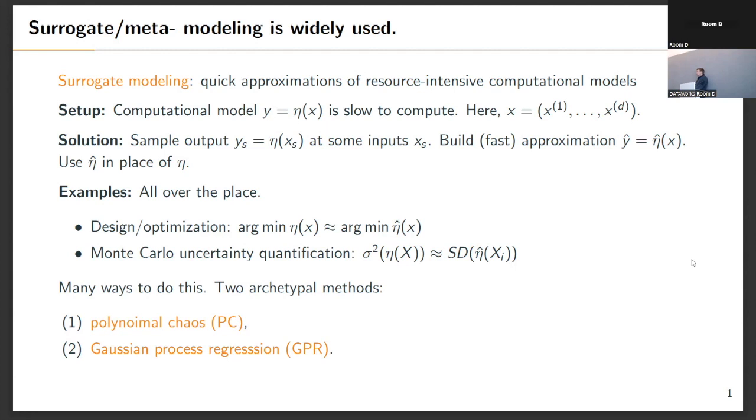And basically, then what I'm going to do is I'm going to use eta hat in place of eta. And this is done all over the place. There's been a ton of talks today already on this, which is great. You know, optimization, I want to optimize eta. Well, I can optimize eta hat. If I want to do some UQ on eta, I can replace it with eta hat. And the hope is that eta hat is a good estimate of eta. Then we approximately do these things well in a feasible manner that we can actually compute.